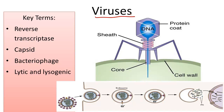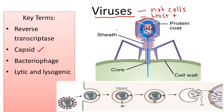Viruses are not cells. They cannot carry out metabolic processes or replication outside of a living cell, requiring some sort of host. A virus uses that organism's DNA or RNA to copy its own genetic material. Viruses are comprised simply of a bit of genetic material, like DNA or RNA, and a protein coat called a capsid.